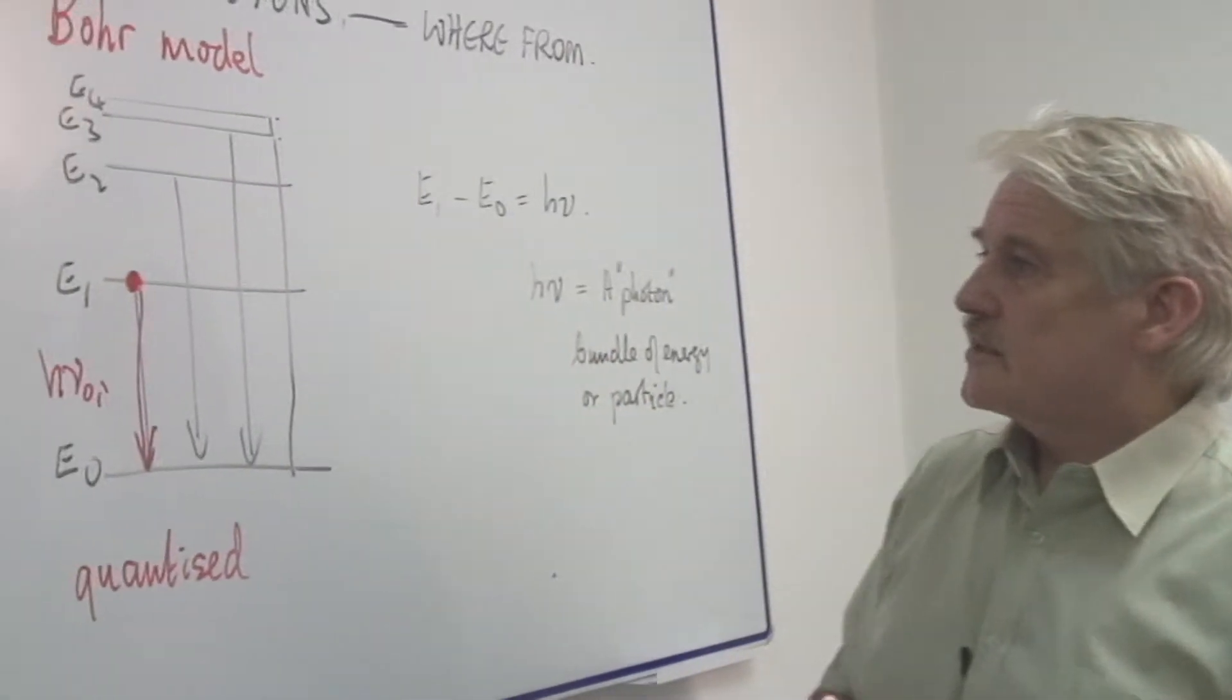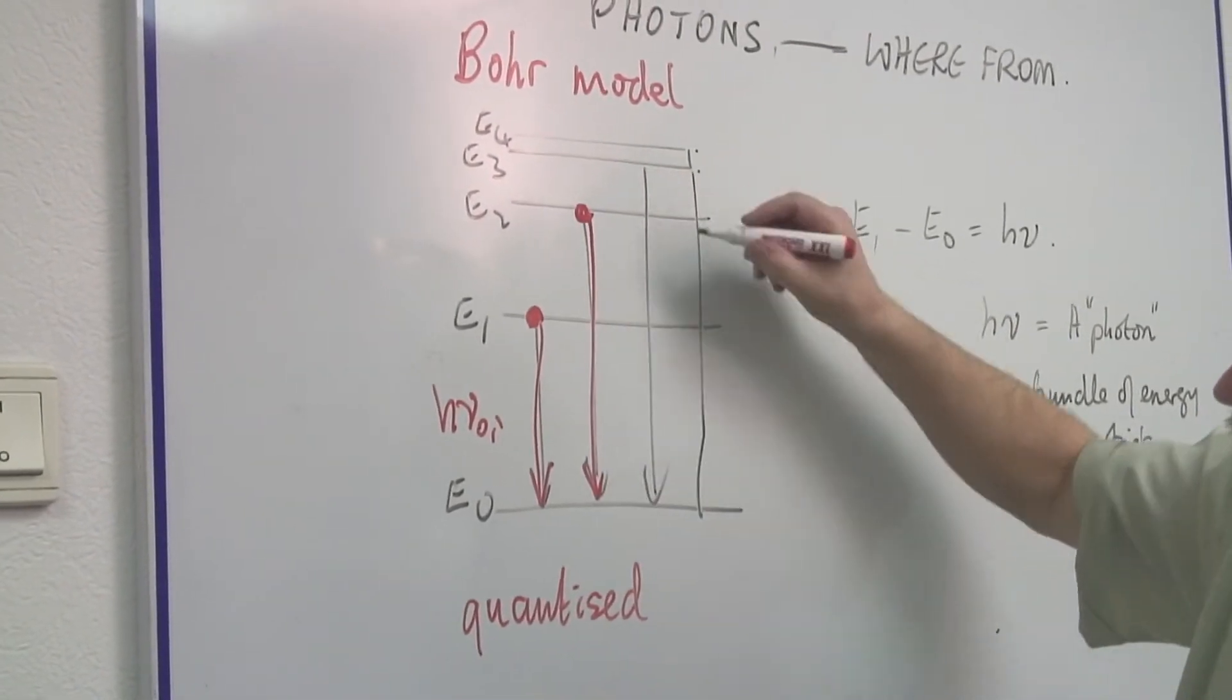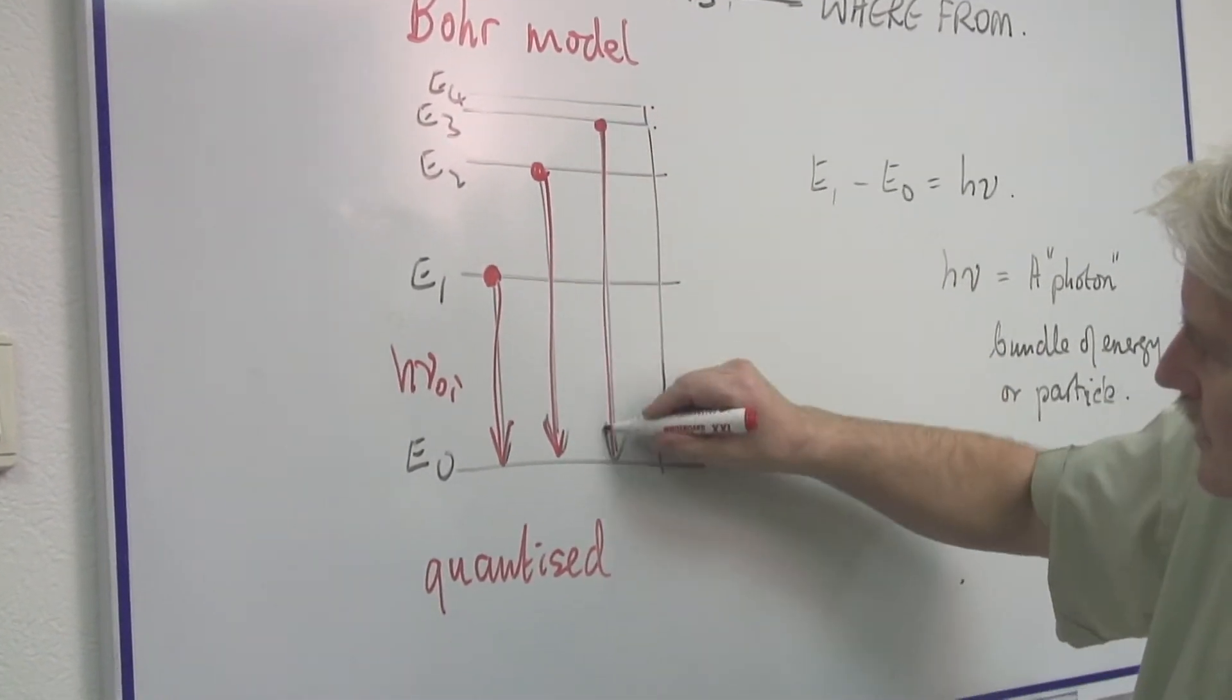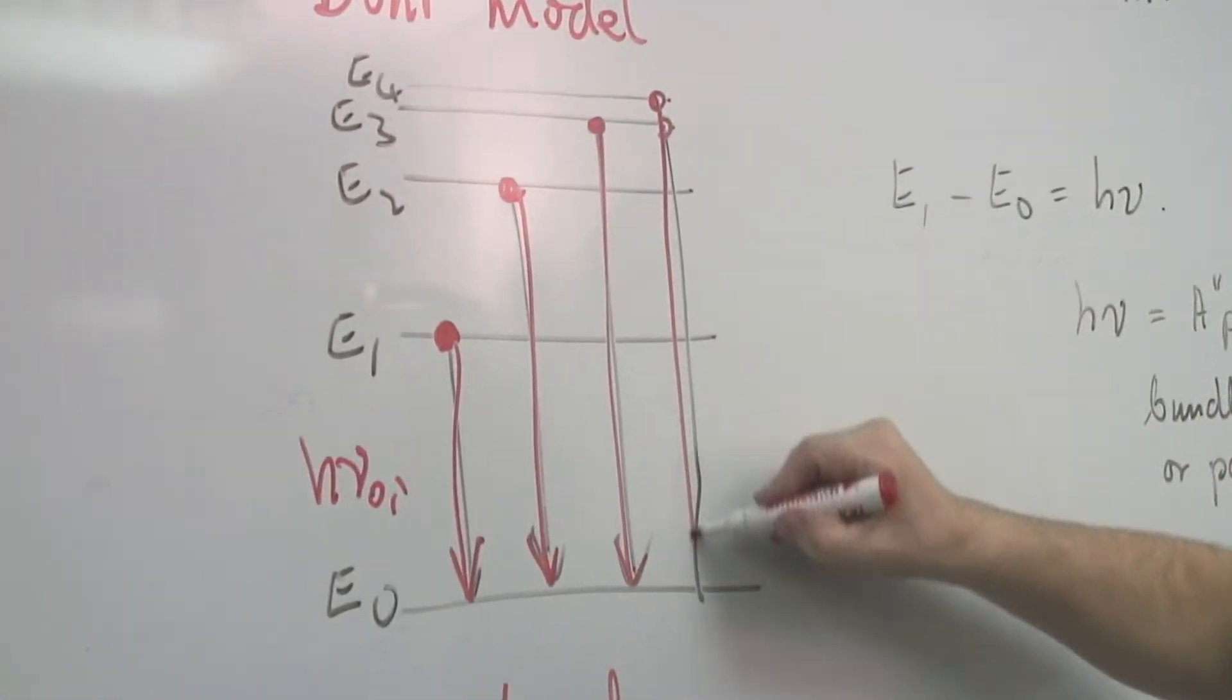Now obviously in this model, there can be various different falls, changes of energy like this. You can see I've got several here. There can be many others too.